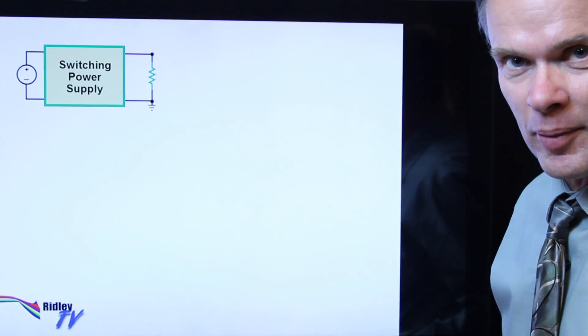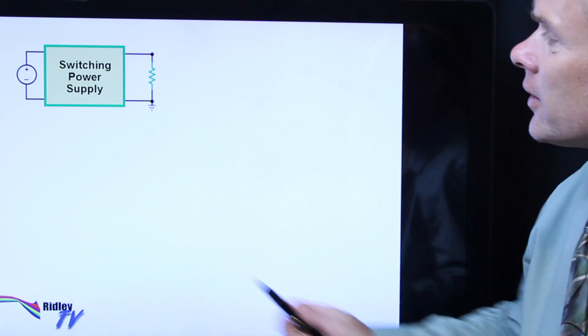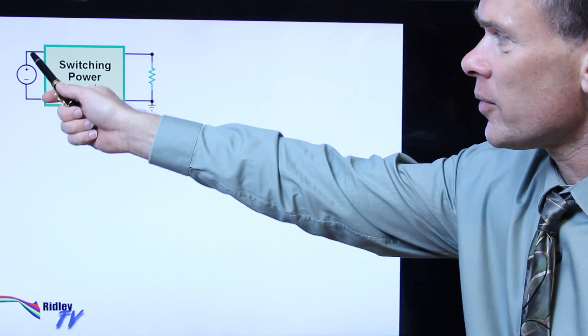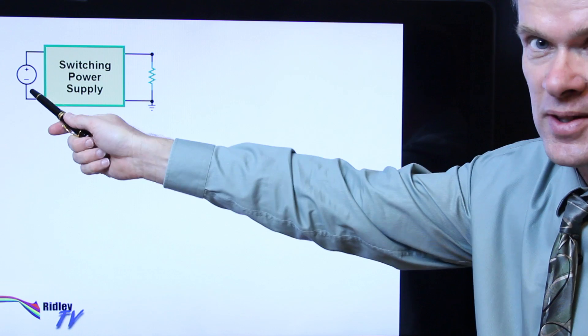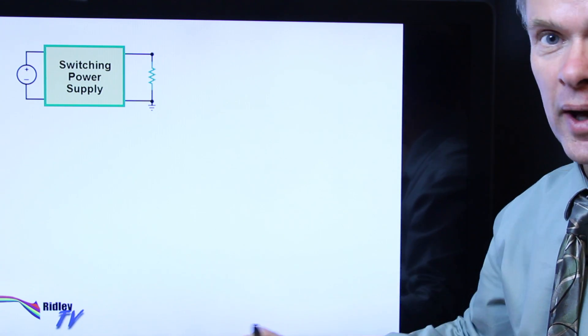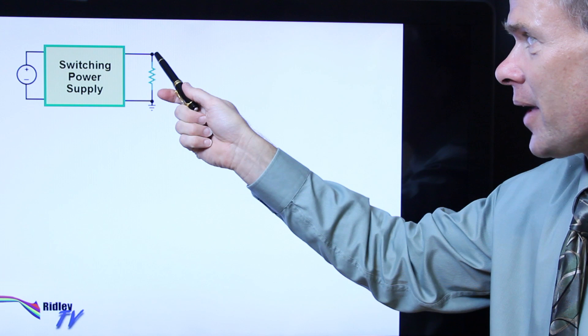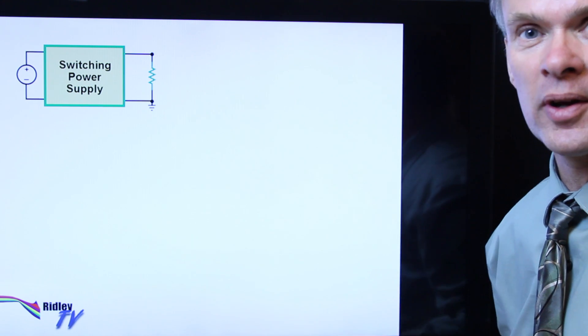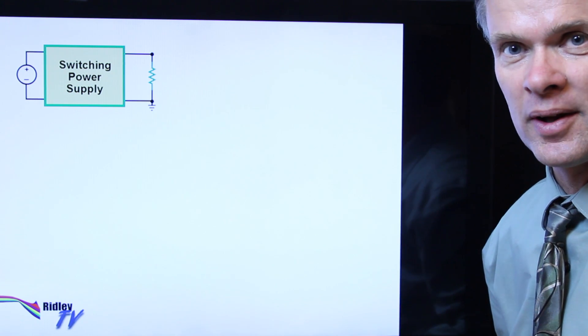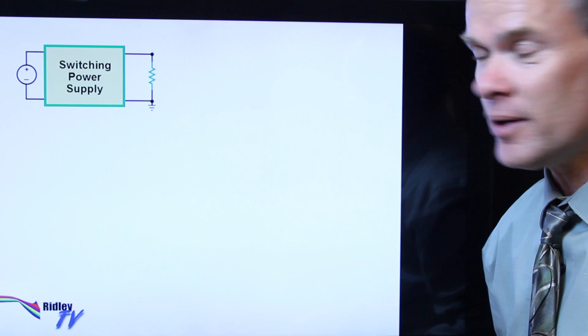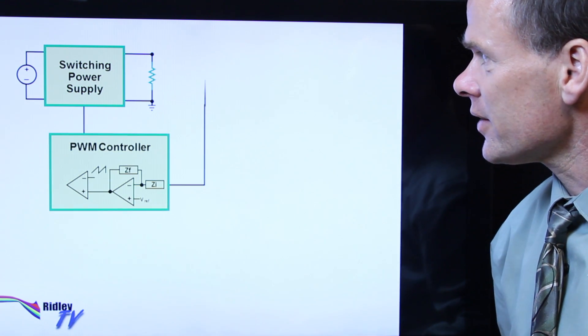So here we have a block diagram of our switching power supply right in here. See the input voltage, which is either rectified AC or DC, and the load resistor. And we all know we have to take feedback from the output of this back through to the input in order to regulate the output properly. So let's add that feedback loop now, and there it is.